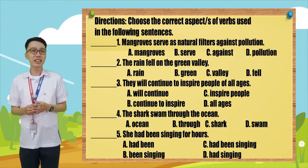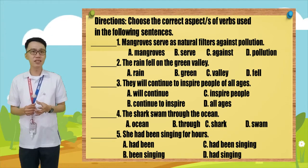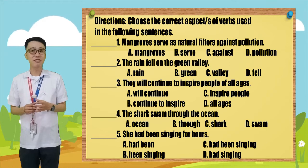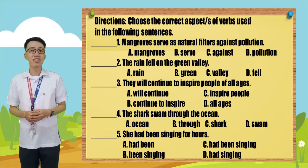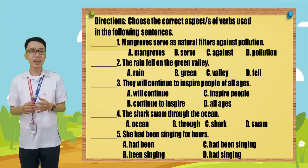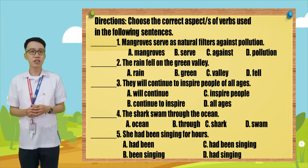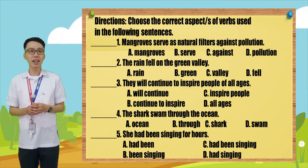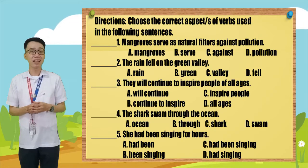Number two: The rain fell on the green valley. A. Rain. B. Green. C. Valley. D. Fell. Number three: We will continue to inspire people of all ages. A. Will continue. B. Continue to inspire. C. Inspire people. D. All ages.